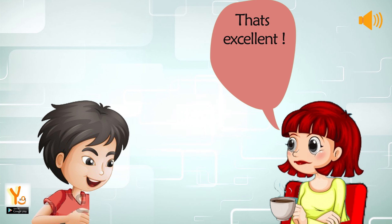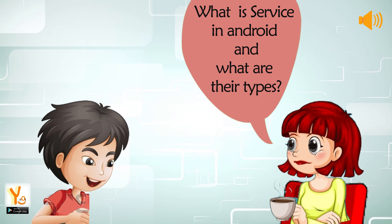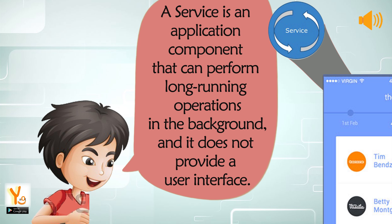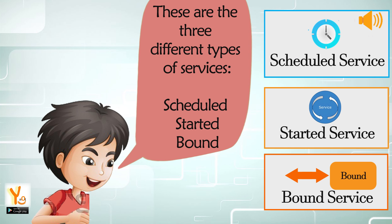The interviewer said: That's excellent. The next question was: What is a service in Android and what are their types? Raj replied: A service is an application component that can perform long-running operations in the background and does not provide a user interface. There are three different types of services: scheduled, started, and bound.